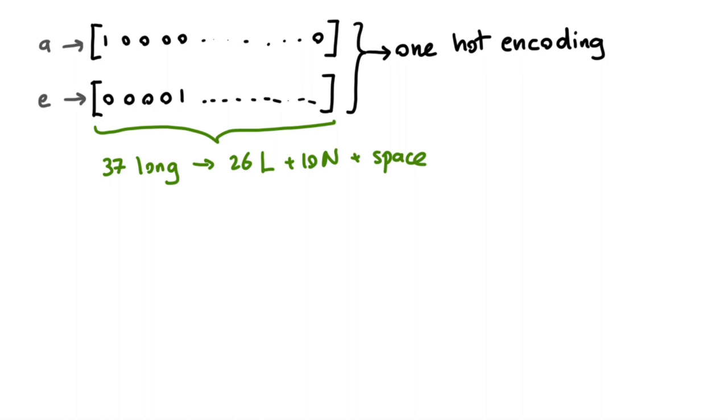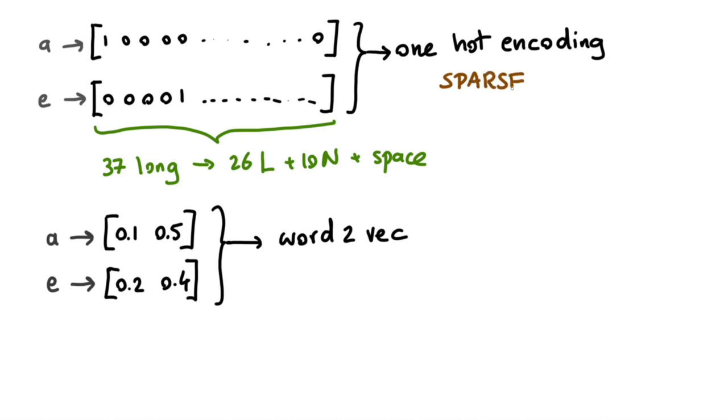What we then did is we came up with approaches and algorithms to represent that just slightly differently. Instead of having this giant one-hot encoding, there's actually some approaches where you end up with different numerical representations. This was the word-to-vec approach.